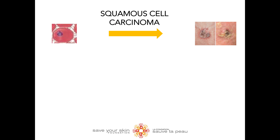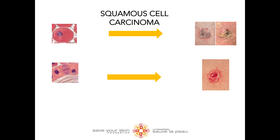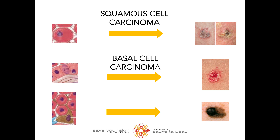The type of skin cancer will depend on which cells become dysregulated and continue to divide. If it is the squamous cells, then the cancer will be squamous cell carcinoma. If it is the basal cells, then the cancer will be basal cell carcinoma. And if it is melanocytes that become dysregulated, then the cancer is called melanoma.